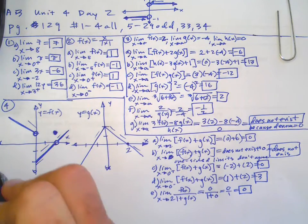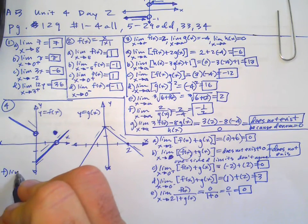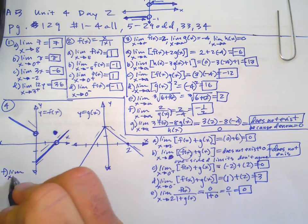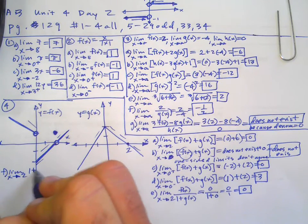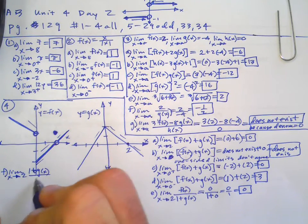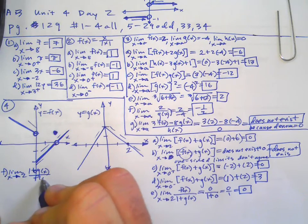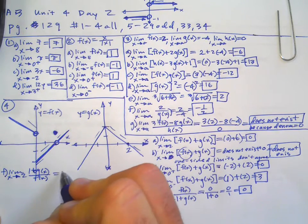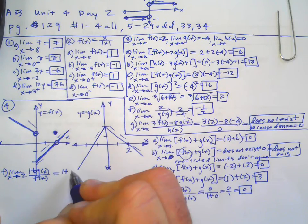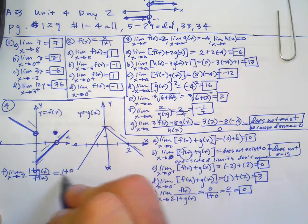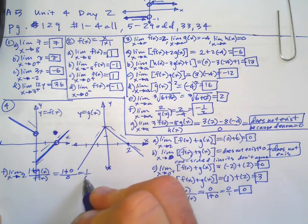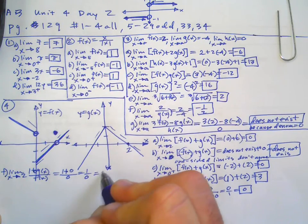Part F: limit as X approaches two of 1 plus G of X over F of X is going to be 1 plus zero over zero, so it's going to be 1 over 0, which does not exist.